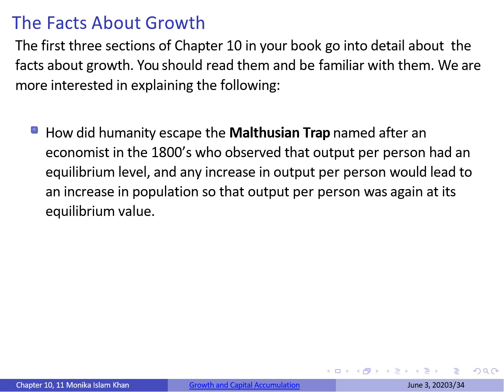So how did humanity escape the Malthusian Trap? The concept of the Malthusian Trap was first proposed by Thomas Robert Malthus in 1798. While living in 19th century England, Malthus witnessed the decline of standard of living as birth rates rose among the poor. He observed that output per person had an equilibrium level, and any increase in output per person from that equilibrium would lead to an increase in population, bringing output per person back to its equilibrium value.